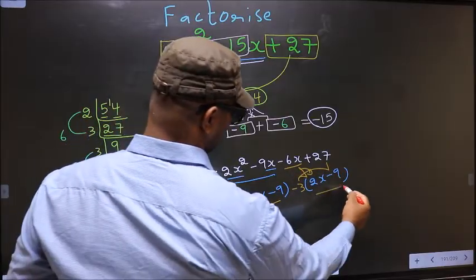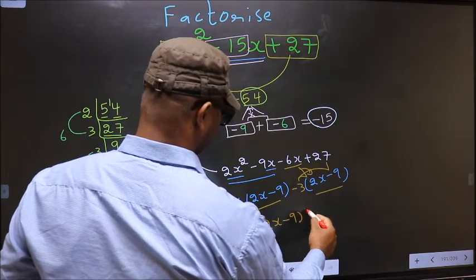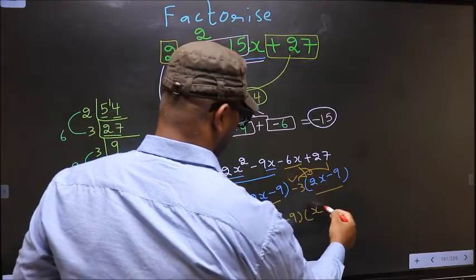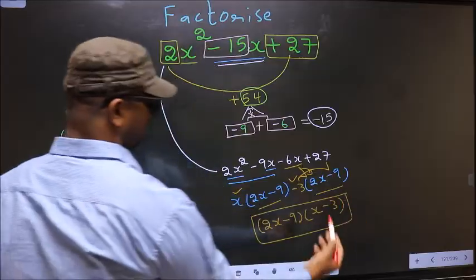Now you take out 2x minus 9 common. So here you have x and here minus 3. This is our answer.